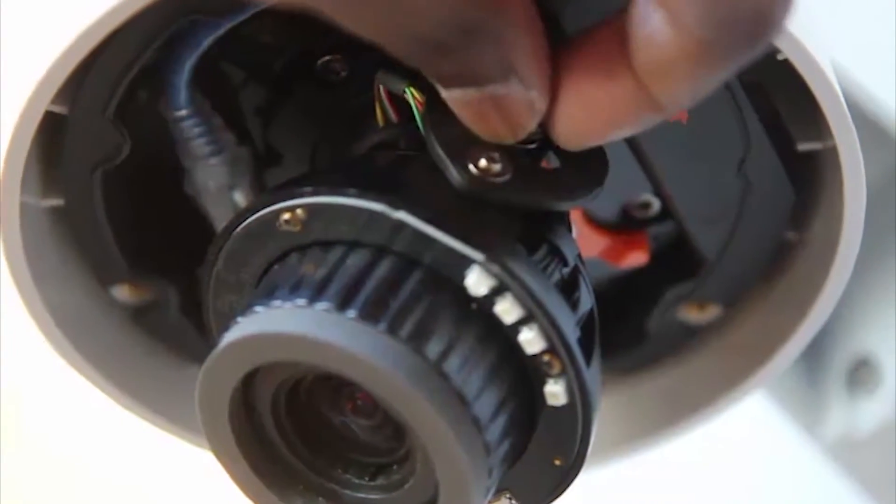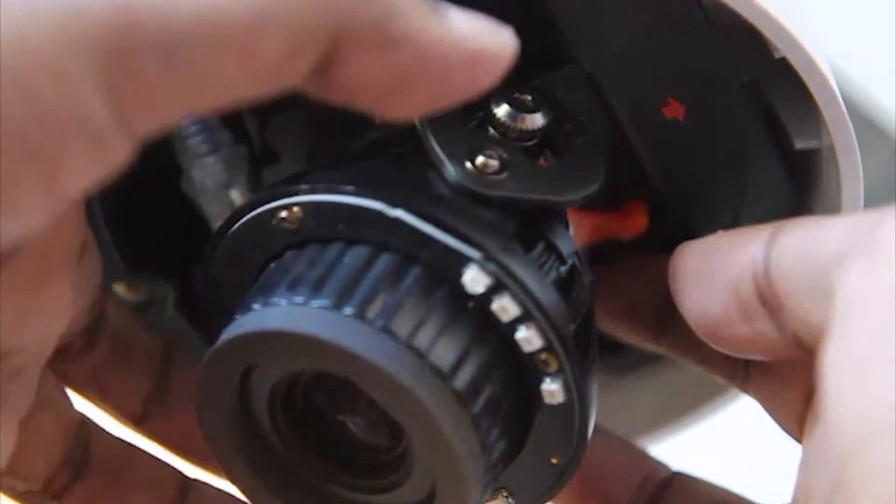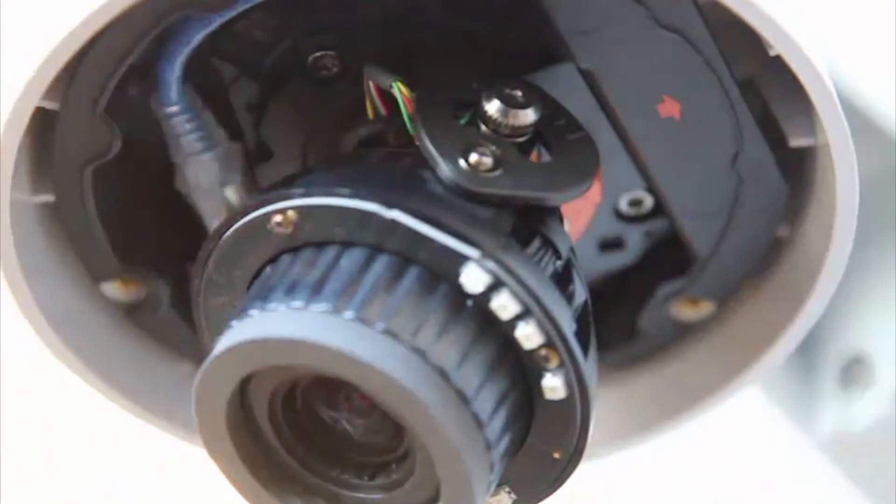Loosen the tilt lock thumb screws to tilt the lens. Lock the pan lock latch and tighten the tilt lock screws to secure the dome camera's position.